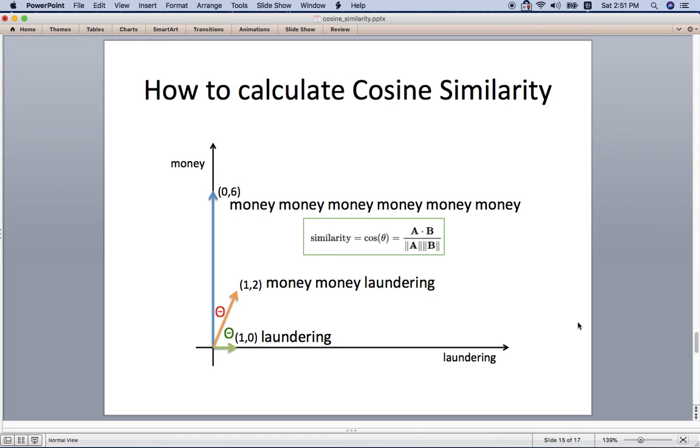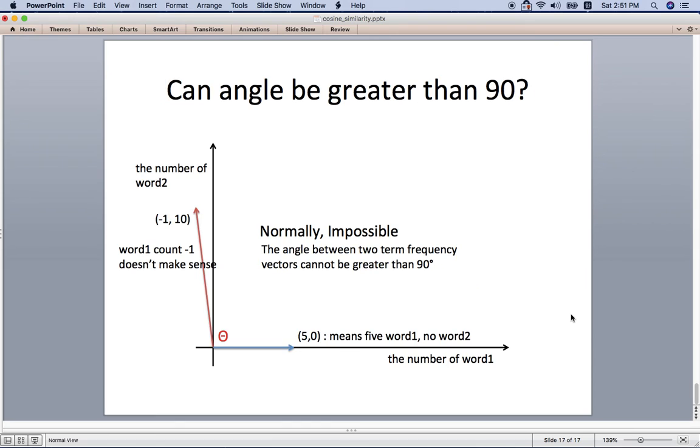So you can use this equation to get the cosine similarity, and the lower angle means the higher similarity. One bonus track here is: can angle be greater than 90? Well, normally impossible. As my example here, this axis is actually the number of words, and the number of words cannot be a negative number.